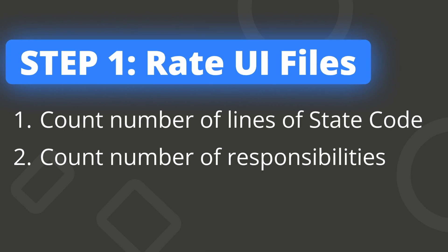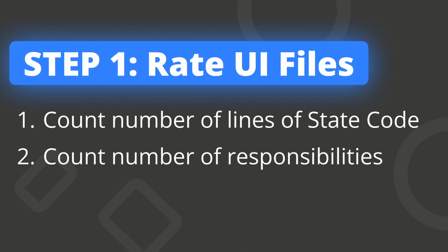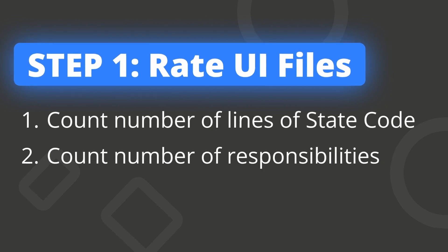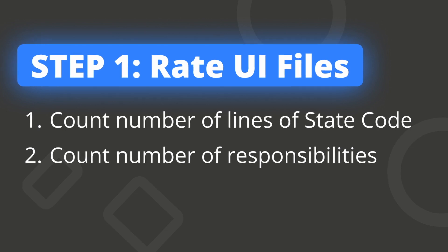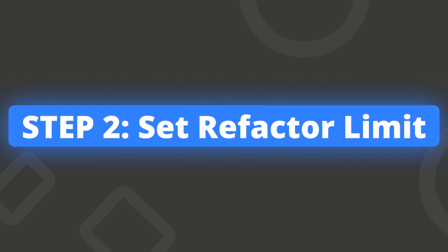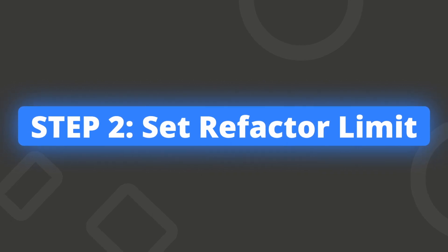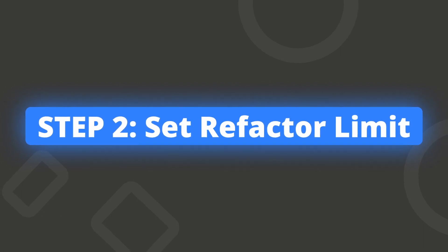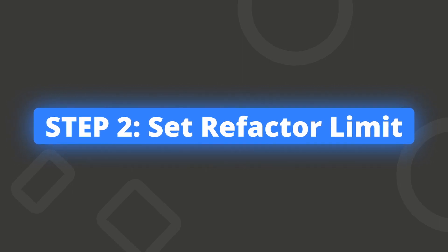The second way I like to do this is to count the number of responsibilities that the file has — identify and count all the responsibilities you can see in the code. I'll make a separate video on what a responsibility looks like and what level of detail you can go to. The second thing I do is decide for the project what my refactor limit should be. The refactor limit is the number you set — when a file goes above this number, it needs to be refactored. For instance, if there are more than 10 lines of state code in a UI file, you refactor it.